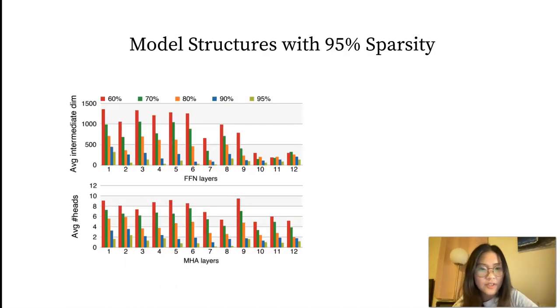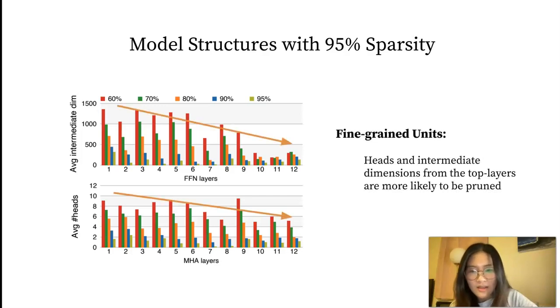In terms of fine-grained units, we show the average remaining intermediate dimensions and the heads across layers and different sparsity, and we found that the heads and intermediate dimensions from the top layers are more likely to be pruned.